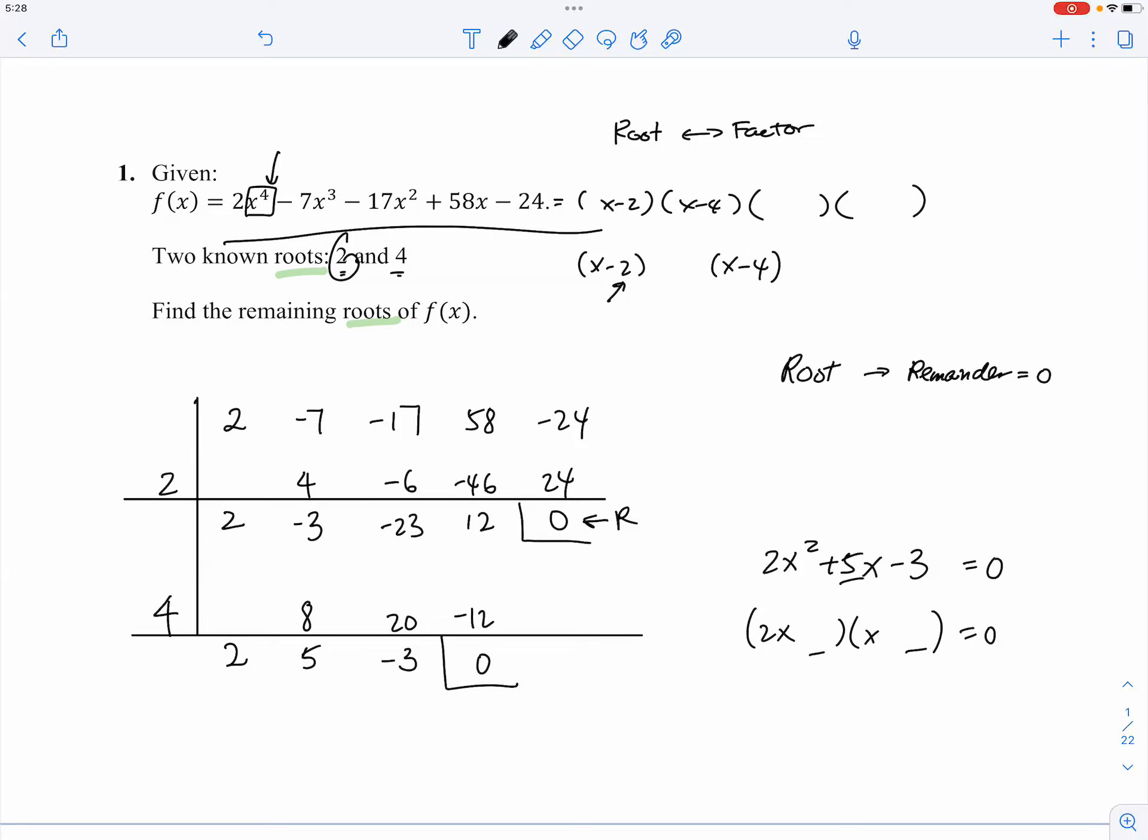Now, because it's plus 5x, I'm thinking about what can we do when we do the foil? What can we do to get positive 5x? I'm going to suggest this. And the reason I'm suggesting this is because when we do the outer, that's 6x. When we do the inner, that is negative x. And therefore, 6x minus x, that's 5x. So, that's how we know they are equivalent to each other. And that's how we know 2x minus 1 is equal to 0. x plus 3 is equal to 0. So, x equals to negative 3. And x equals to positive 1 half. So, these are the two remaining roots.